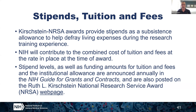Each year, after our budget is approved, NIH oftentimes receives a modest increase to stipends, tuitions and fees, and other categories of costs for T32s. If that is approved, it will be announced in the NIH Guide for Grants and Contracts to reflect and articulate those new levels of cost.